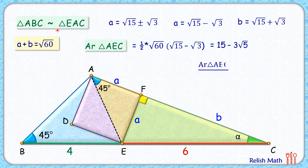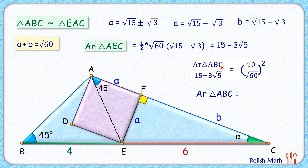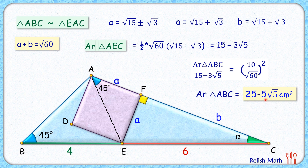Since triangles ABC and AEC are similar, the ratio of their areas equals the square of the ratio of their sides. So area of ABC / area of AEC = (BC/AC)² = (10/√60)². Substituting area of AEC = 15 − 3√5, BC = 10, and AC = √60, we get area of triangle ABC = 25 − 5√5, which simplifies to 13.82 cm². That's our answer. I hope you enjoyed the solution — see you in the next video, bye!